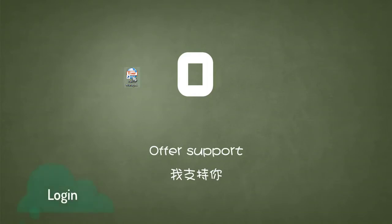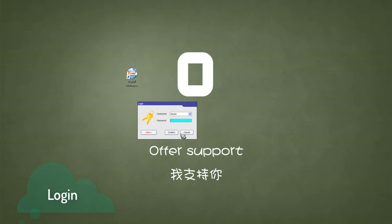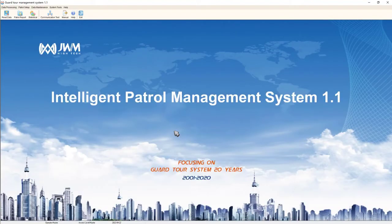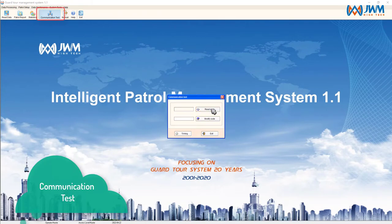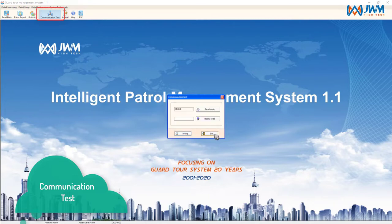Hi guys, this time I will introduce how to use our basic software. The default password is 999. Here is the dashboard. At the beginning, we need to confirm whether the device can work with the current software. Please click the communication test, then click read code and timing. If the software works normally, it means the device can communicate with the software.